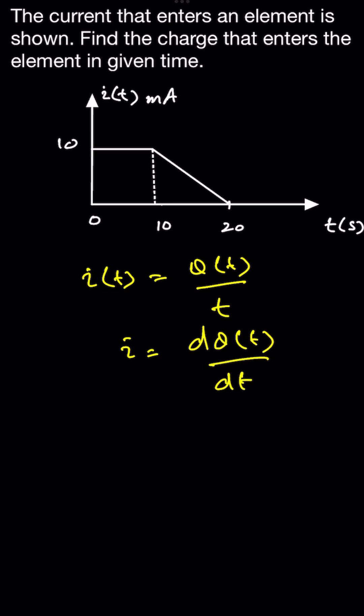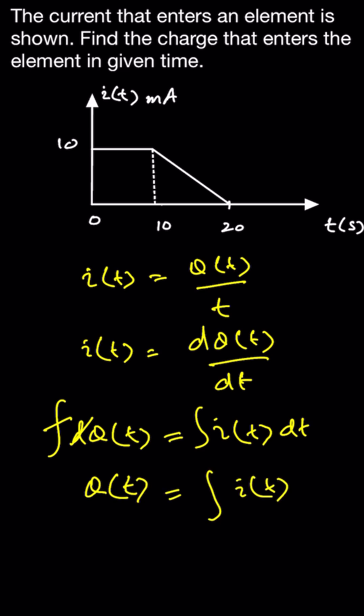Or in other words, we can say that charge entering the system is equal to i(t) dt. And if you want to find the total charge, we need to integrate both sides of the equation. So we can say that Q(t) is equal to the integral of i(t) dt.